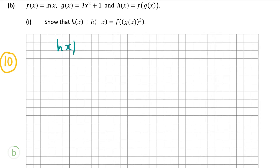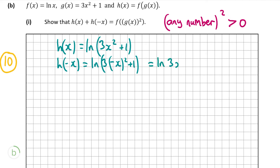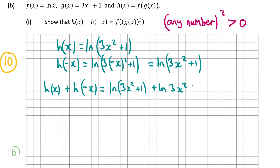We work out h(x) first. h(x) is just putting g(x) into f(x), which gives ln(3x² + 1). Now I'm going to do the same thing for h(−x), which gives ln(3 × (−x)² + 1). However, remember that any number squared is always positive, which means we can get rid of the minus — so that's just ln(3x² + 1) again. Now we can add both of these together: ln(3x² + 1) + ln(3x² + 1).